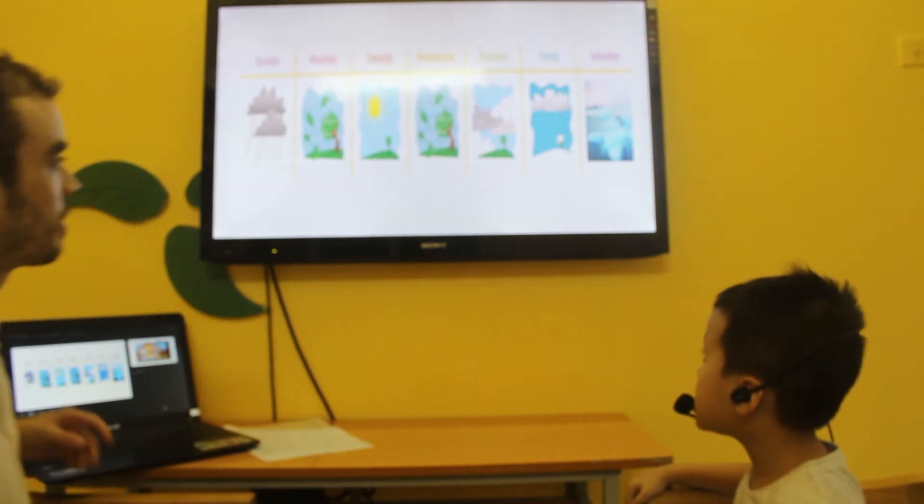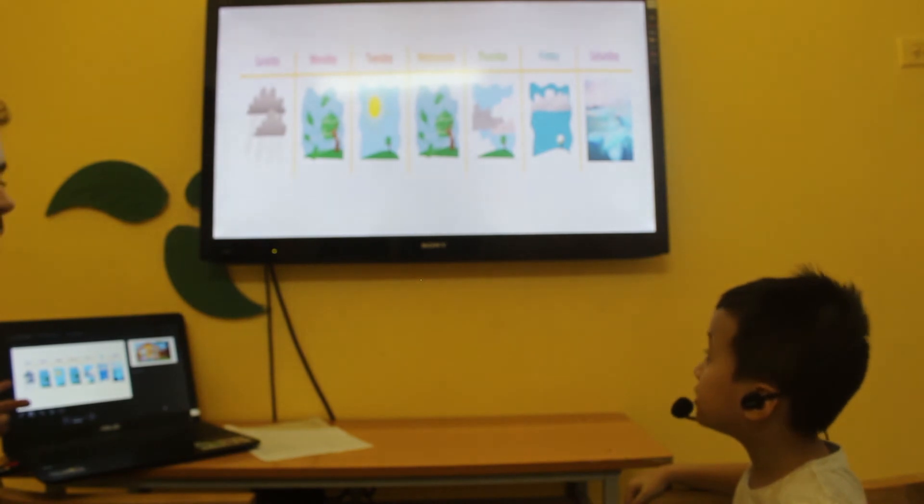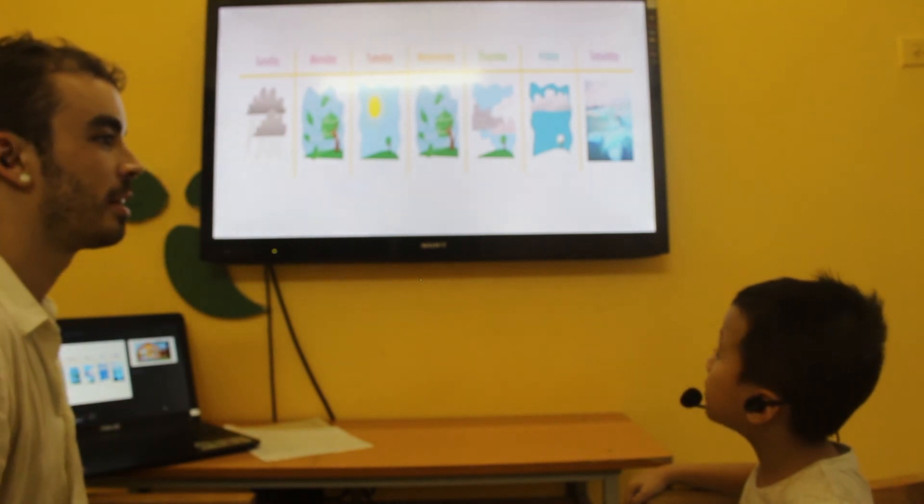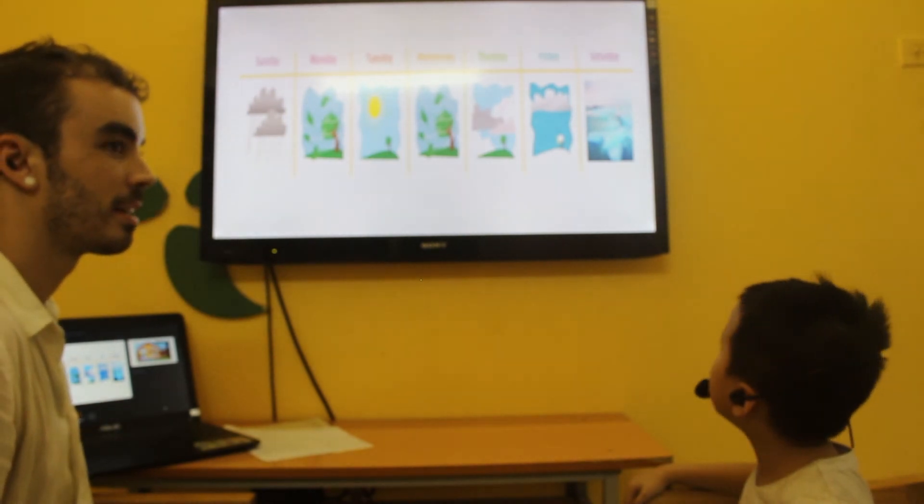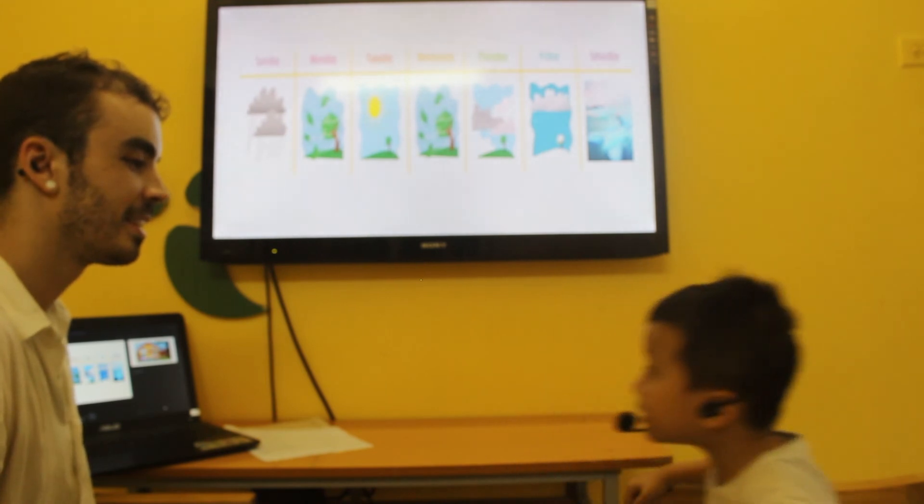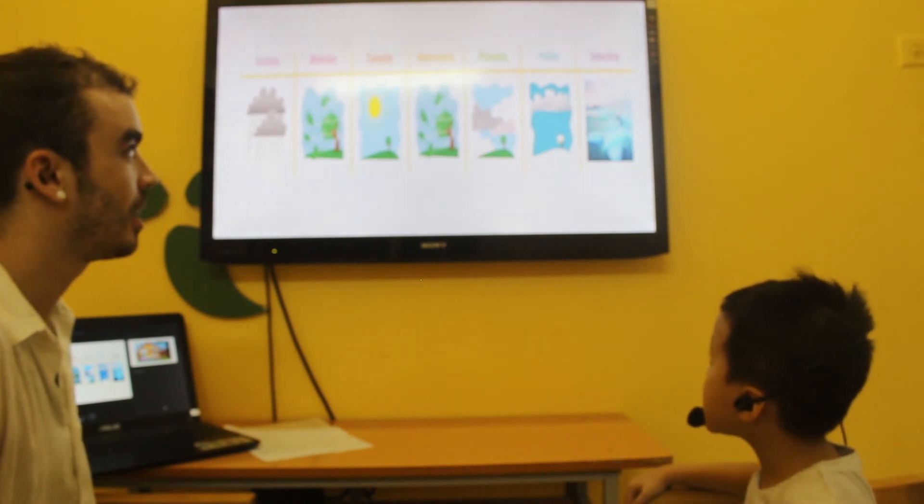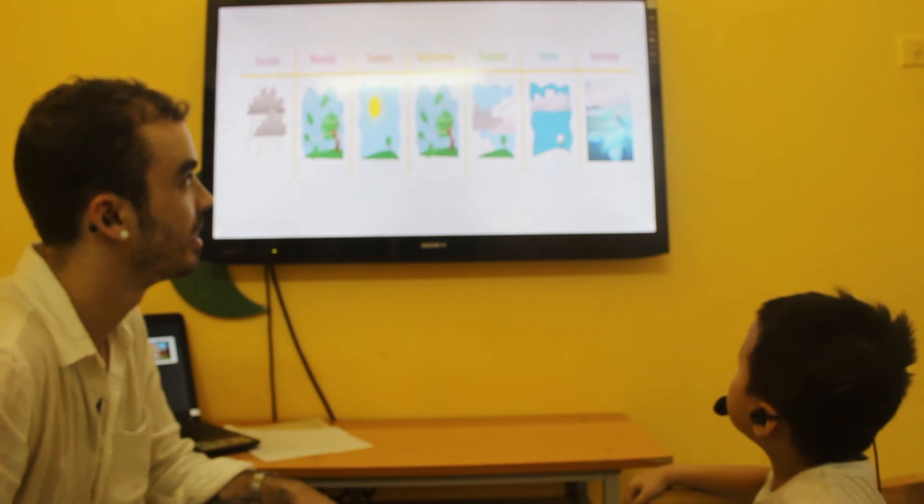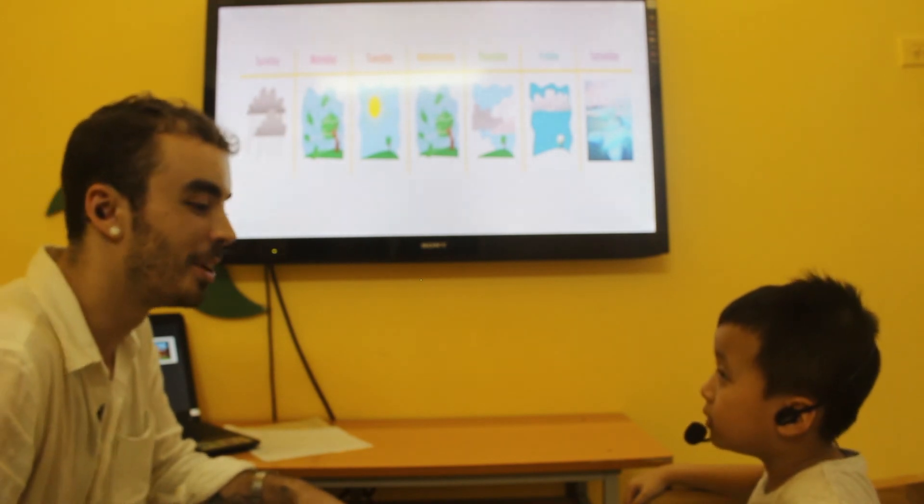How is the weather on Sunday? Tuesday is rainy. No. Tuesday is... sunny. Yeah. How is the weather on Saturday? Saturday is cold. Yeah. It's cold.